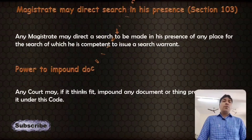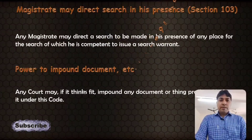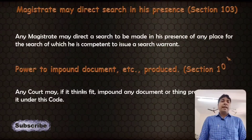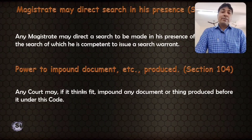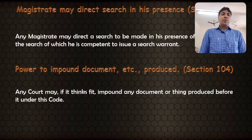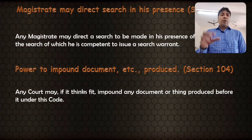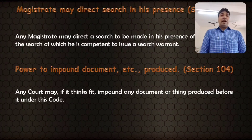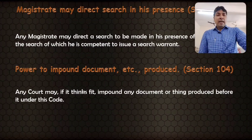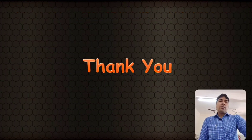Section 104 — power to impound document. Any court may, if it thinks fit, impound any document or thing produced before it under this Code. So any document produced before the court can be impounded by the court whenever it deems appropriate.